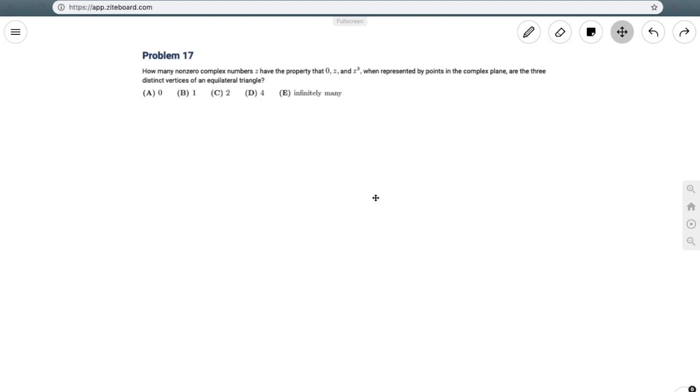Hi, welcome back to on-the-spot STEM, and today we're going to be tackling 2019 AMC 12B, problem number 17, which reads: how many non-zero complex numbers z have the property that 0, z, and z-cubed, when represented by points in the complex plane, are the three distinct vertices of an equilateral triangle?